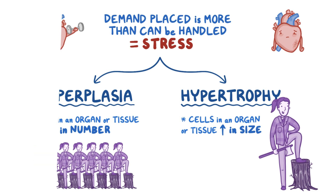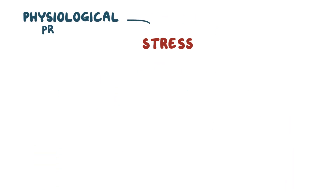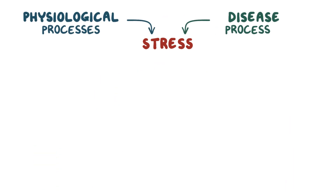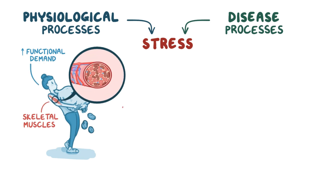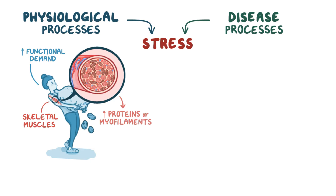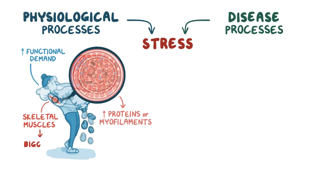A tissue or organ might get stressed by physiological processes or from disease processes. An example of physiologic hypertrophy is lifting a 10-pound sack of potatoes, which puts a bigger functional demand on your skeletal muscles. In response, the muscle cells produce more proteins, or myofilaments, and get larger in size, allowing the biceps as a whole to generate more force. As a result, your muscles also become bigger and tougher.